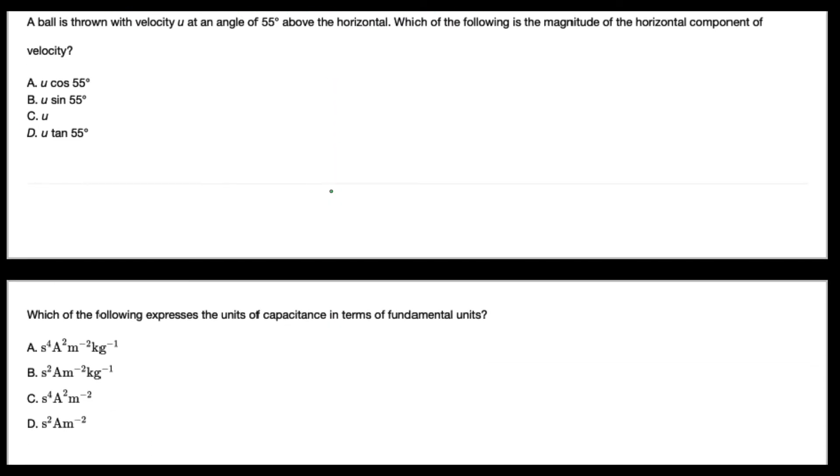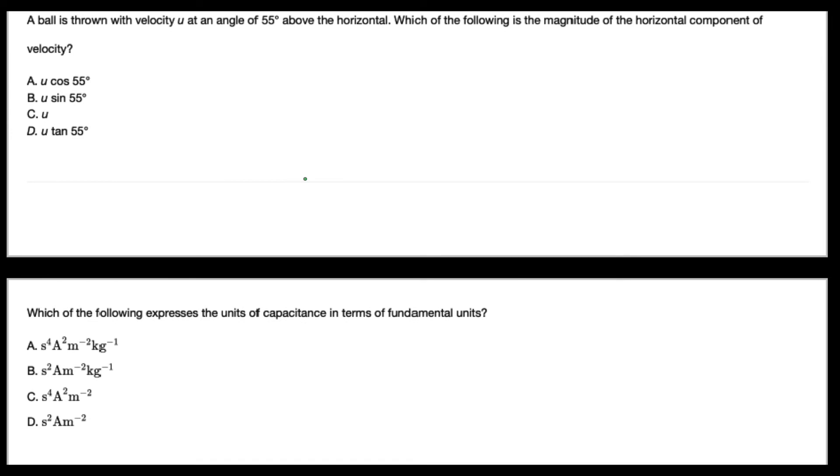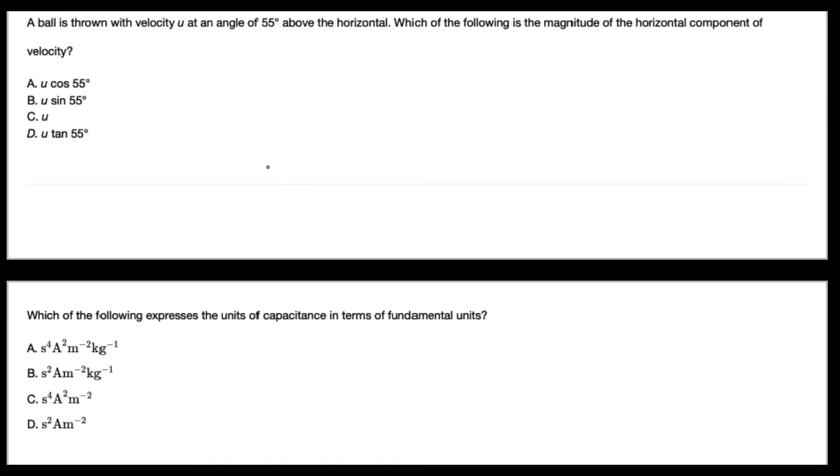A ball is thrown at a velocity u at an angle of 55 degrees above the horizontal. Which of the following is the magnitude of the horizontal component of the velocity? So this is the initial velocity, and at a degree of 55 degrees to the horizontal. So we want to calculate the horizontal component.